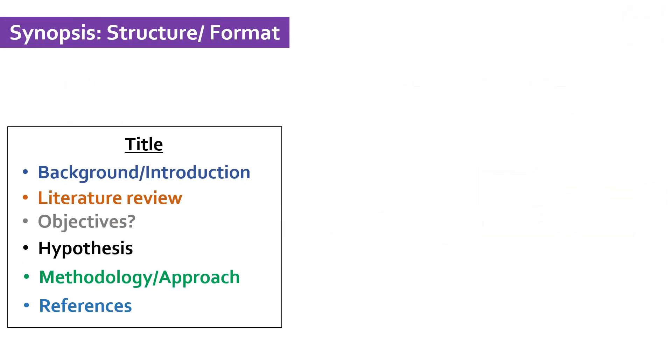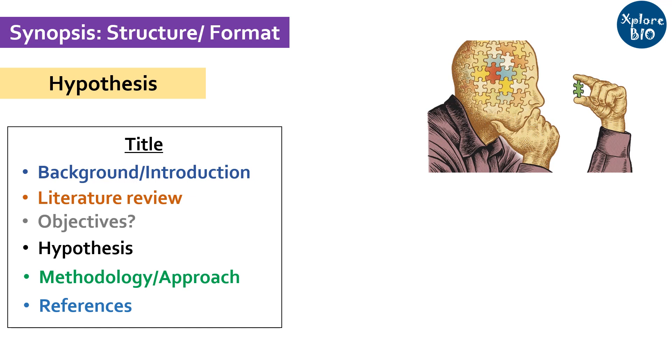Depending upon the university or the institutional guidelines for the synopsis writing, hypothesis can be mentioned after literature review or the objective section. Hypothesis should not be vague. After critically thinking about the existing information and your imagination, you come up with a hypothesis. Hypothesis is based upon the predictions that you think might be right but is not necessary to be true.